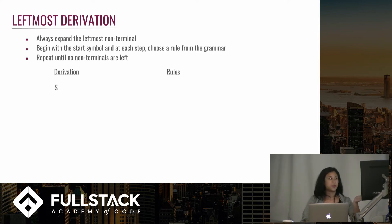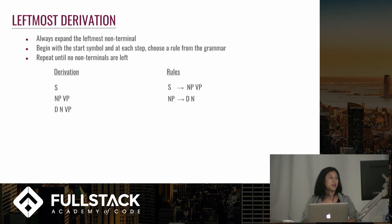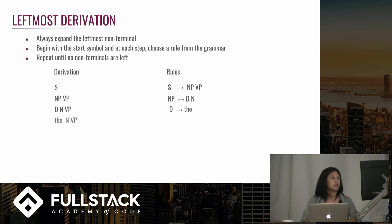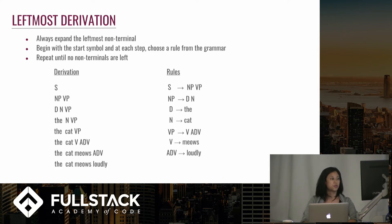So let's say we start again with S. We find a rule that says S becomes NP VP, and then we find a rule for NP, and we continue to only focus on the left until the terminal is reached. So D becomes 'the', and then we can take care of N, which is 'cat', and so on until we get the phrase. The derivation is finished when all of the elements are terminals.